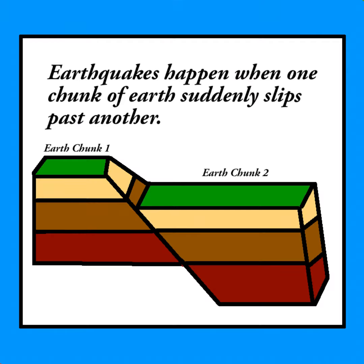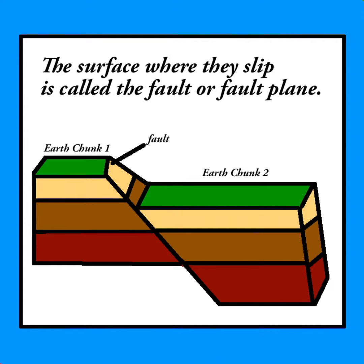Earthquakes happen when one chunk of earth suddenly slips past another. The surface where they slip is called the fault, or fault plane.